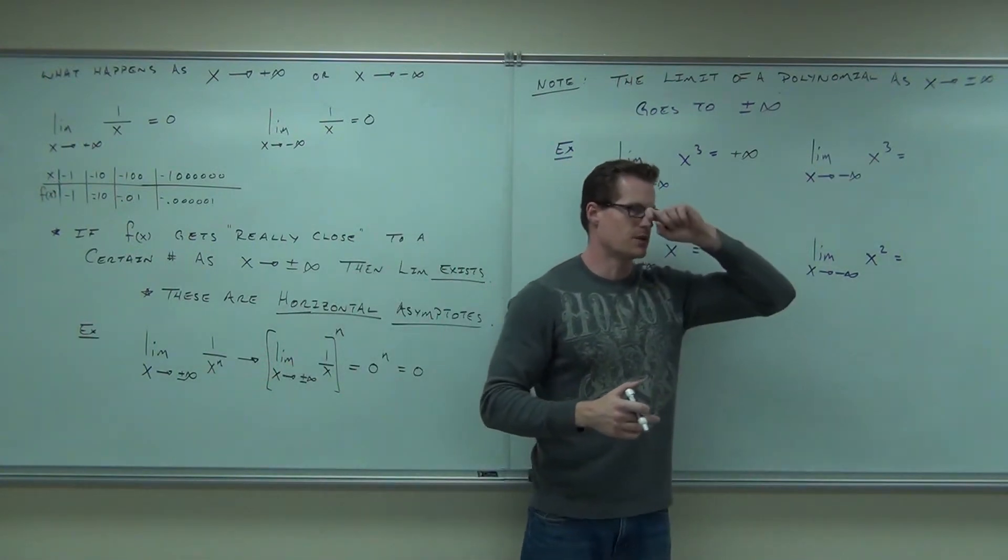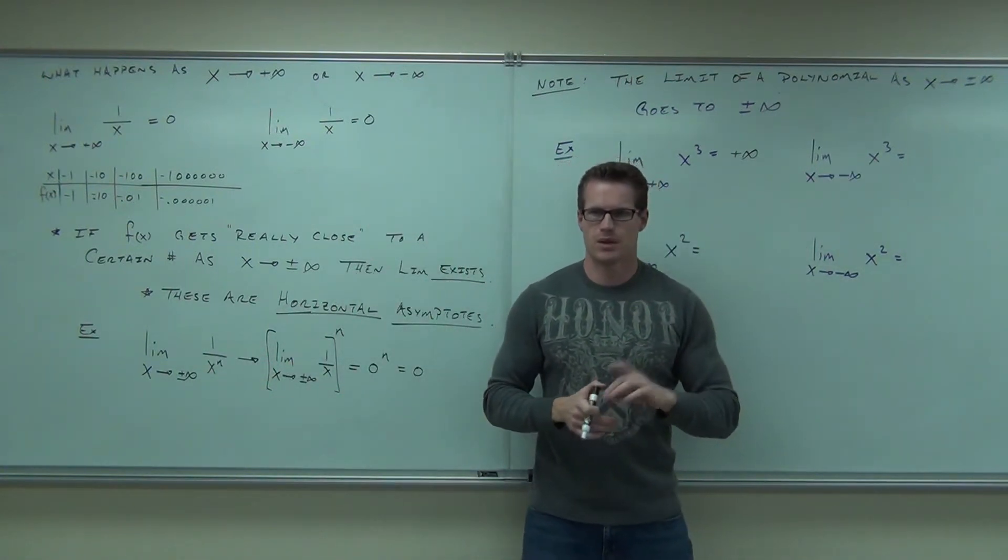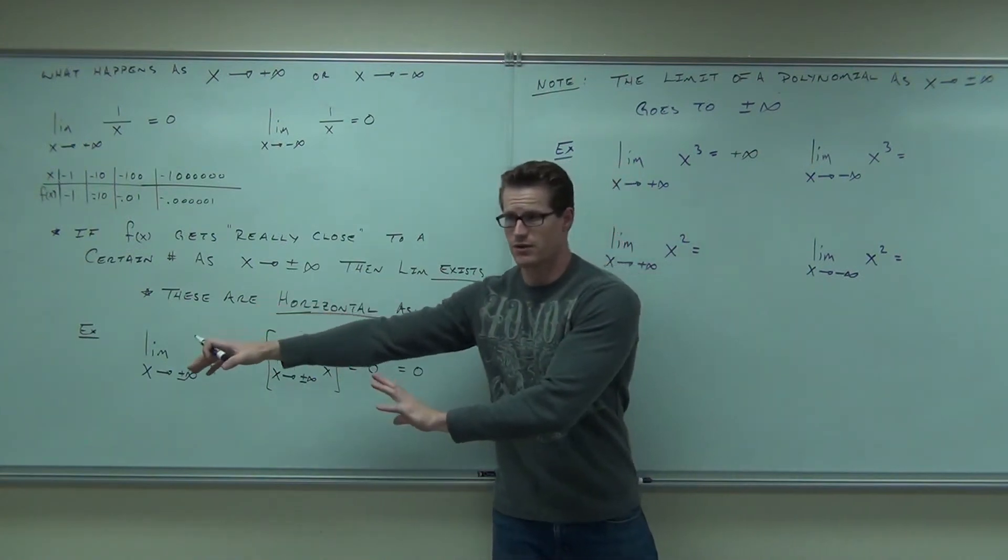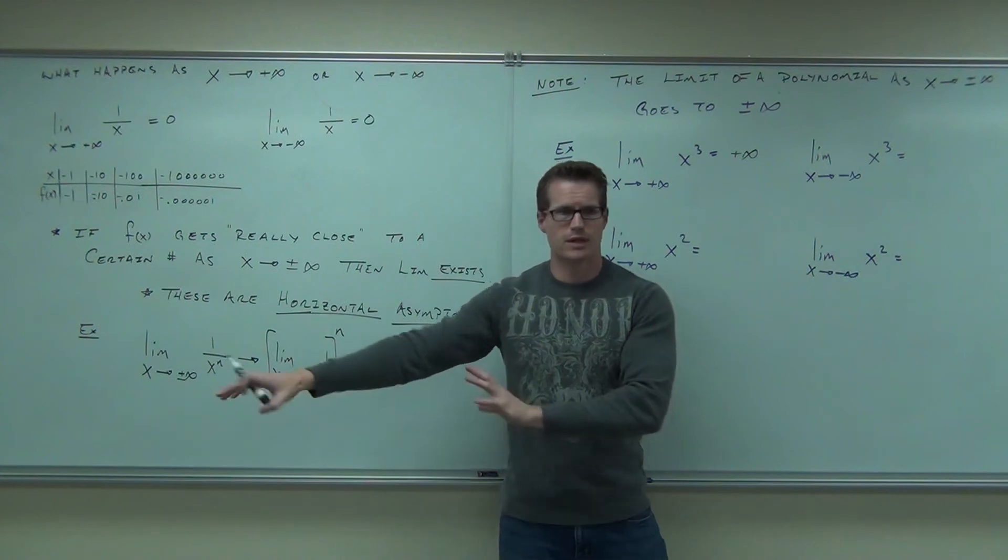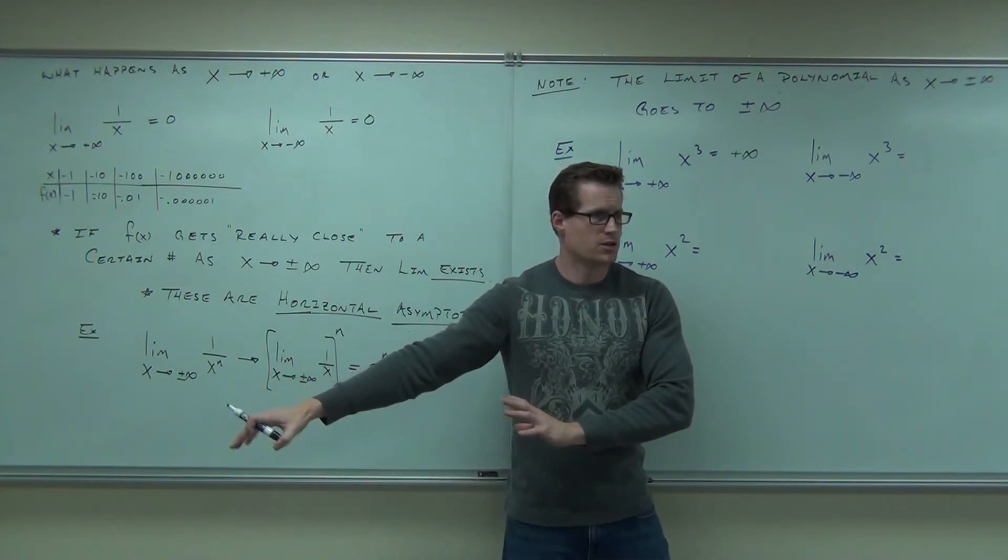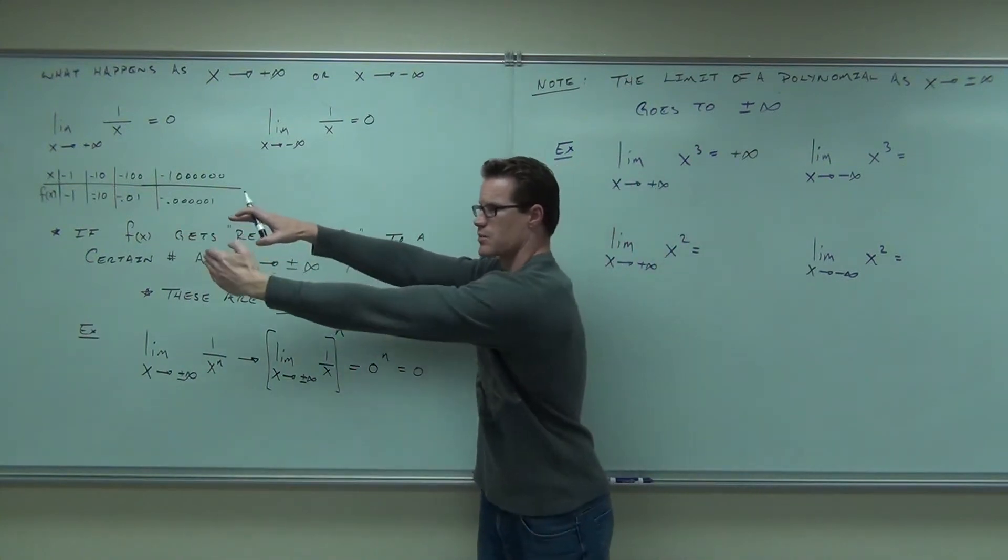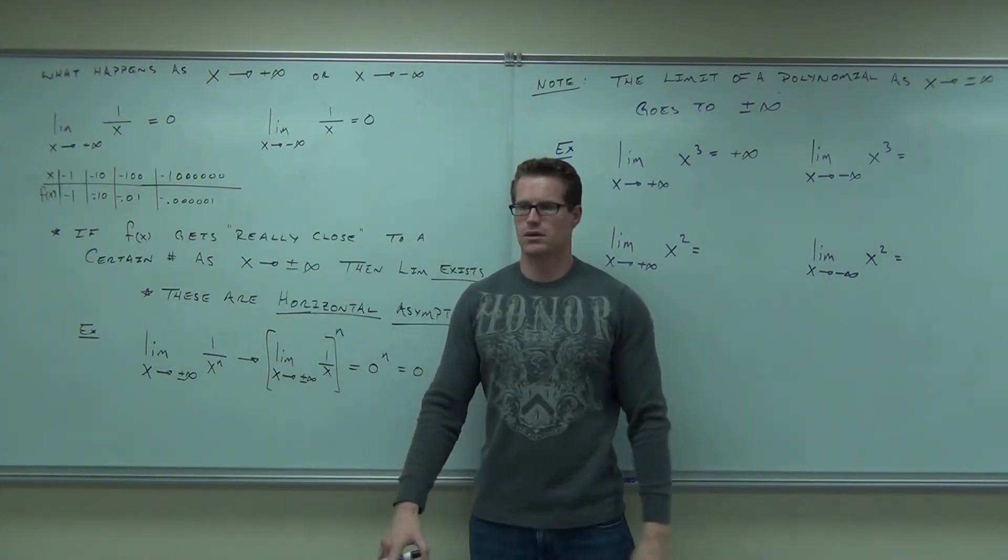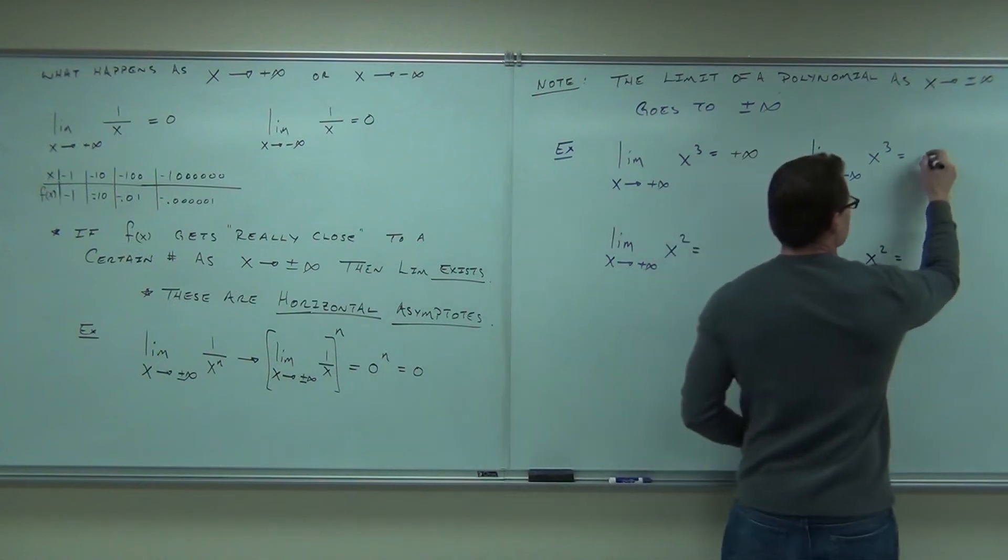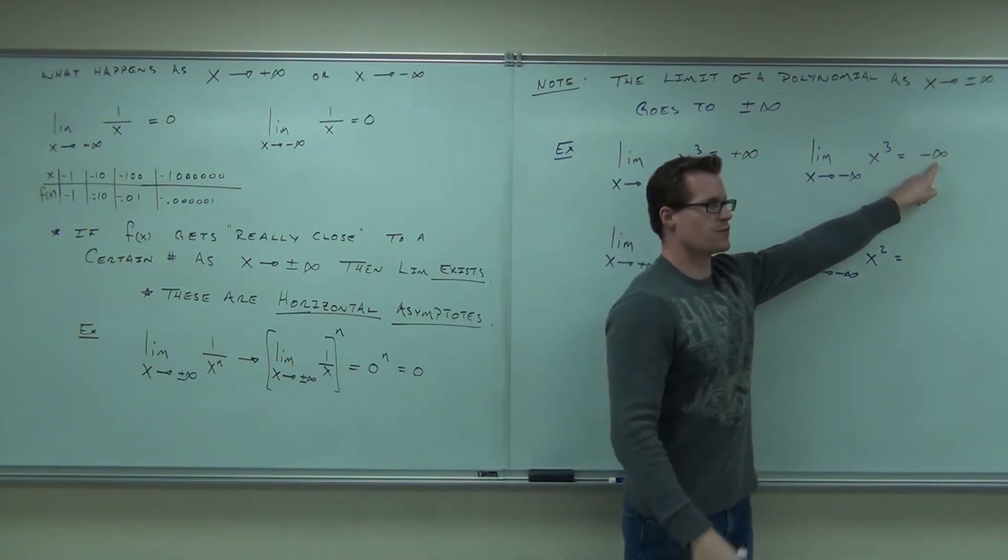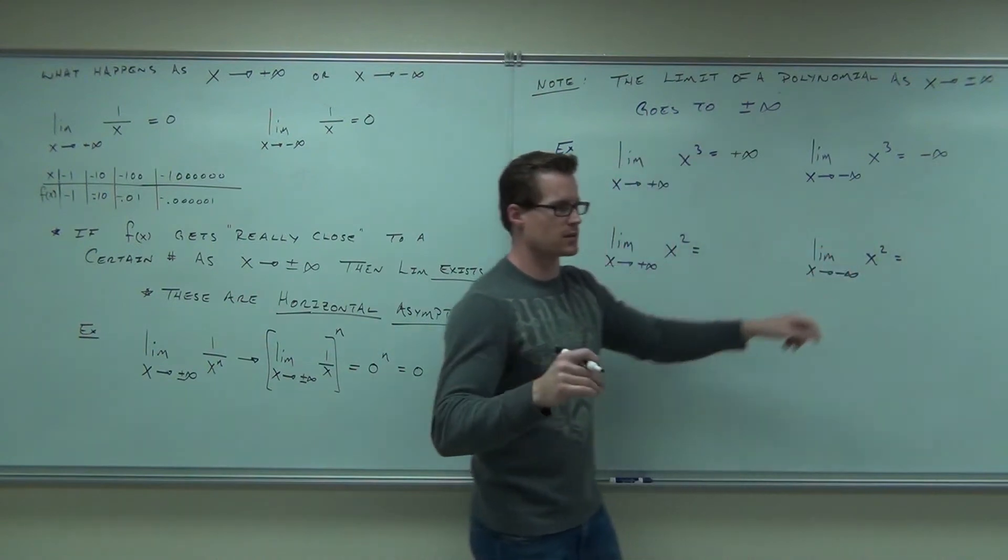The bigger the positive number I plug in, the bigger the positive number I get out. Let's try this one. Negative infinity. Take a negative number, plug it in. Take a smaller negative number, even more negative, plug it in. Do you still get negative? Do you see that this one's actually going to negative infinity? Further we go left on the number line, the further we go down on the y-axis. Negative infinity. And that's what that says. The further you go left, the further your function drops. Does that make sense to you?